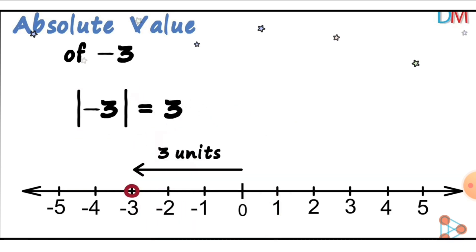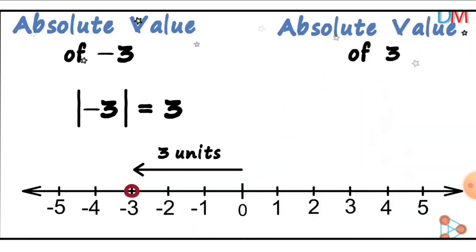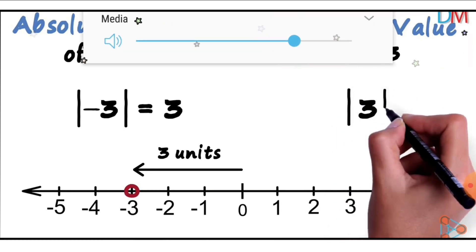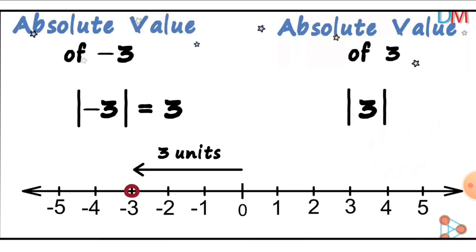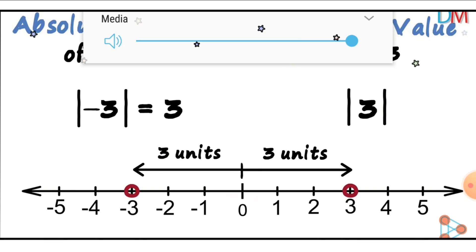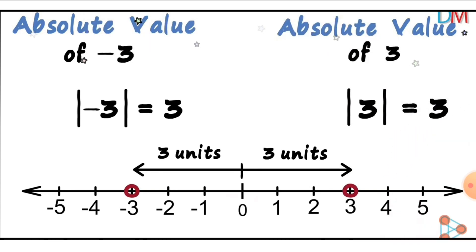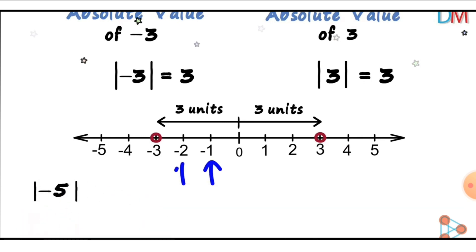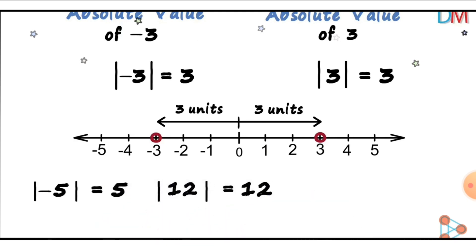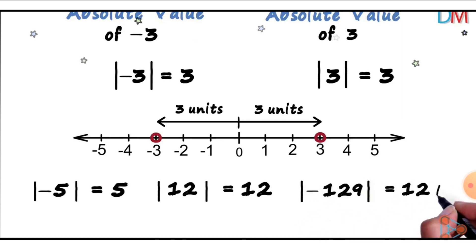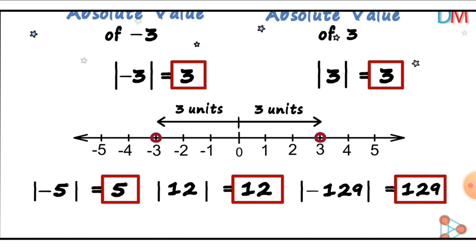Since we are talking about distance: how about the absolute value of positive three? We count the distance of three from zero: one, two, three — still three units. So the absolute value of three is positive three. How about the absolute value of negative five? Count from zero to negative five — that is five. How about positive twelve? The answer is twelve. And negative one hundred twenty-nine? That is one hundred twenty-nine. They are all positive.